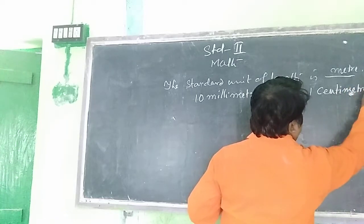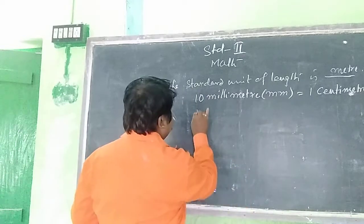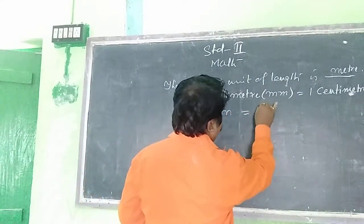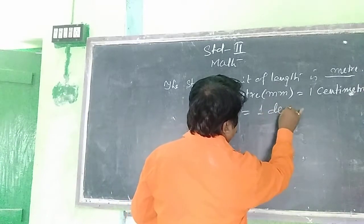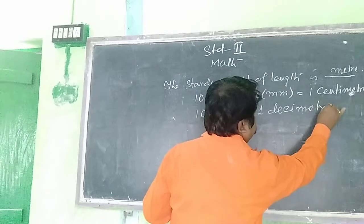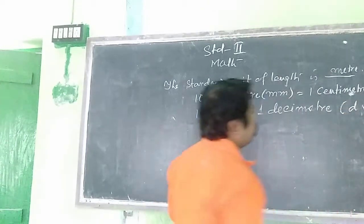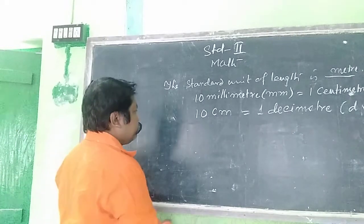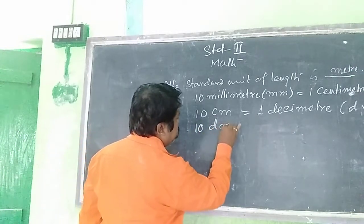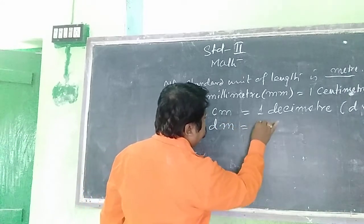Short form cm. Ten centimeters equals one decimeter. Short form of decimeter is dm. Ten decimeters equals one meter.